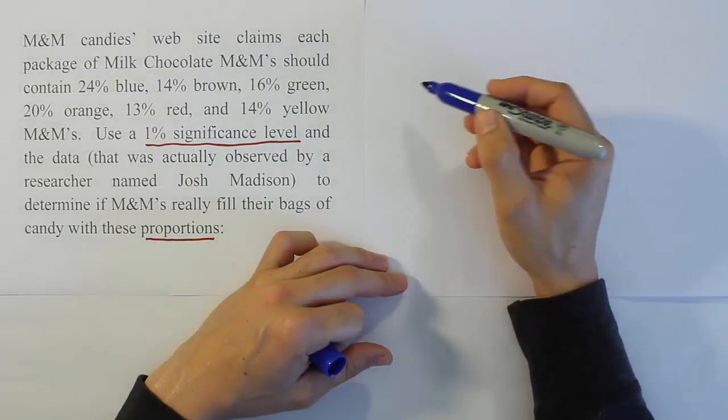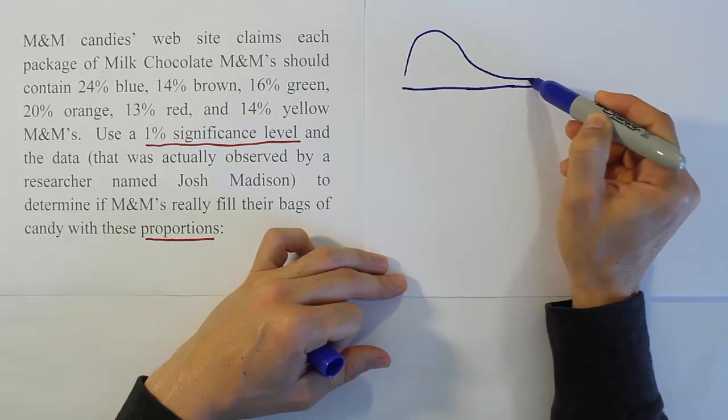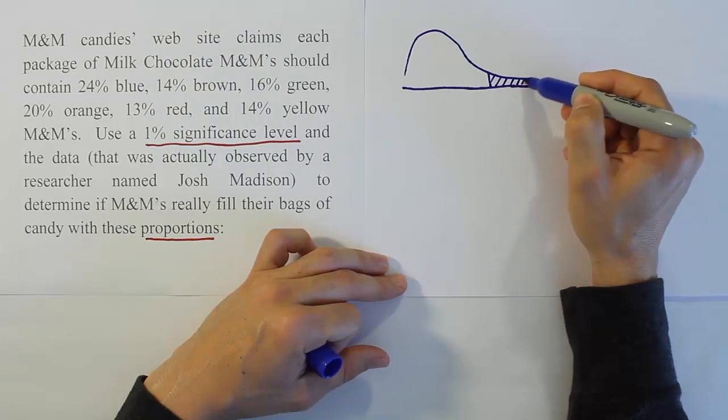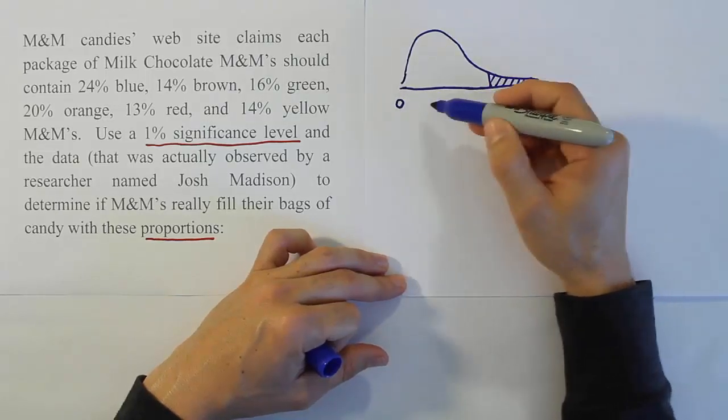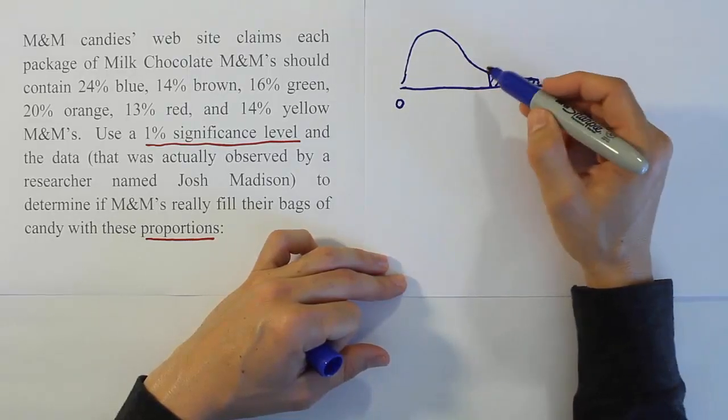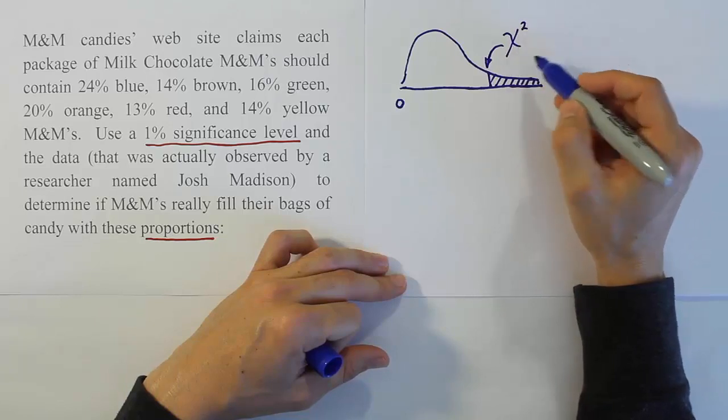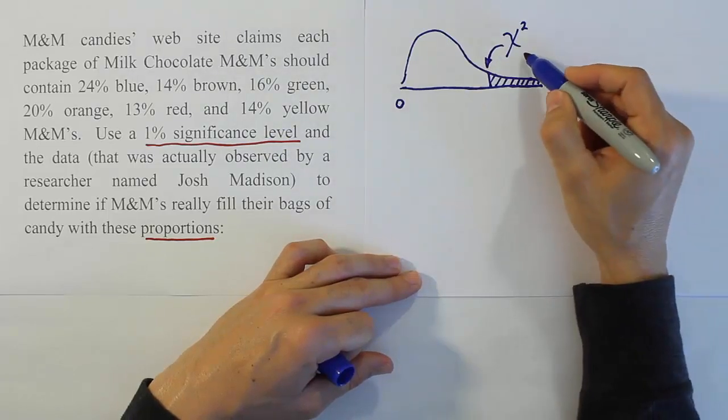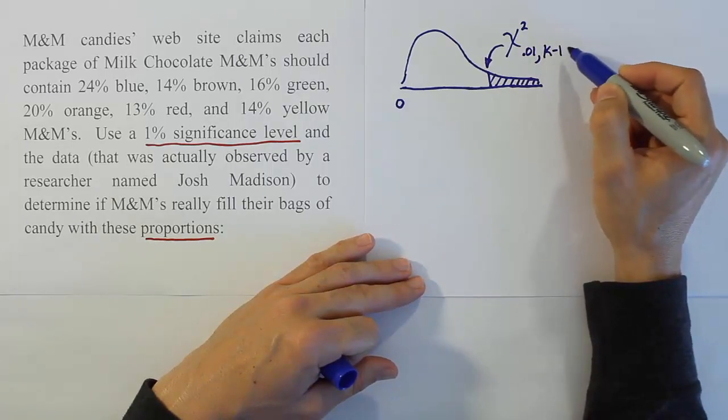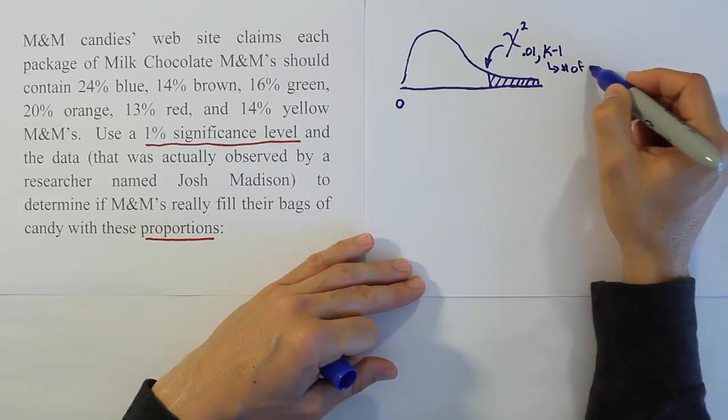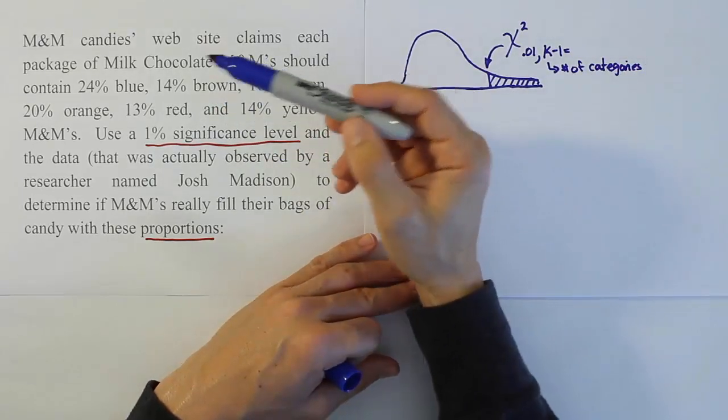The chi-squared distribution looks like the F curve - a skewed distribution with a long skinny tail on the right. Our procedure is always a right-tailed test. The chi-squared number line goes from 0 to infinity. We're looking for the cutoff score where we reject versus do not reject. That's a chi-squared value using our alpha, which is 0.01. We need degrees of freedom, which is k minus 1, where k is the number of categories.